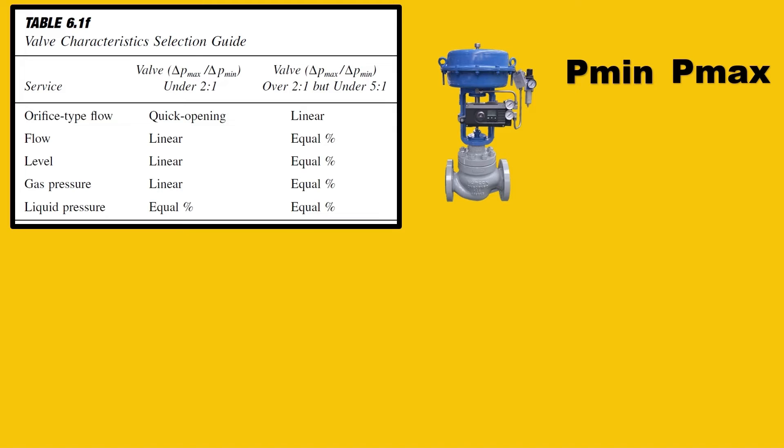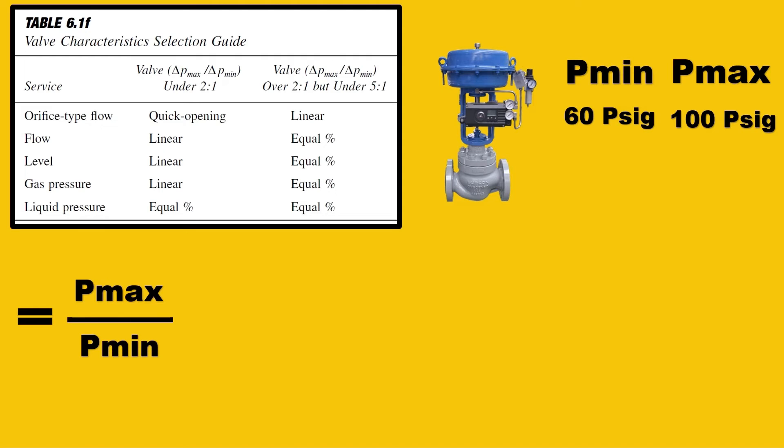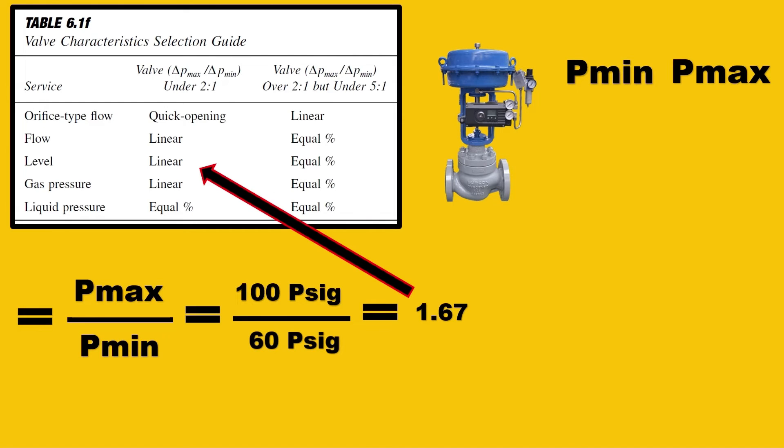Imagine you have a valve with minimum pressure 60 psig and maximum pressure 100 psig. The formula is simple: Pmax/Pmin = 100/60 = 1.67. The pressure variation is less, so it recommends going for linear characteristics.